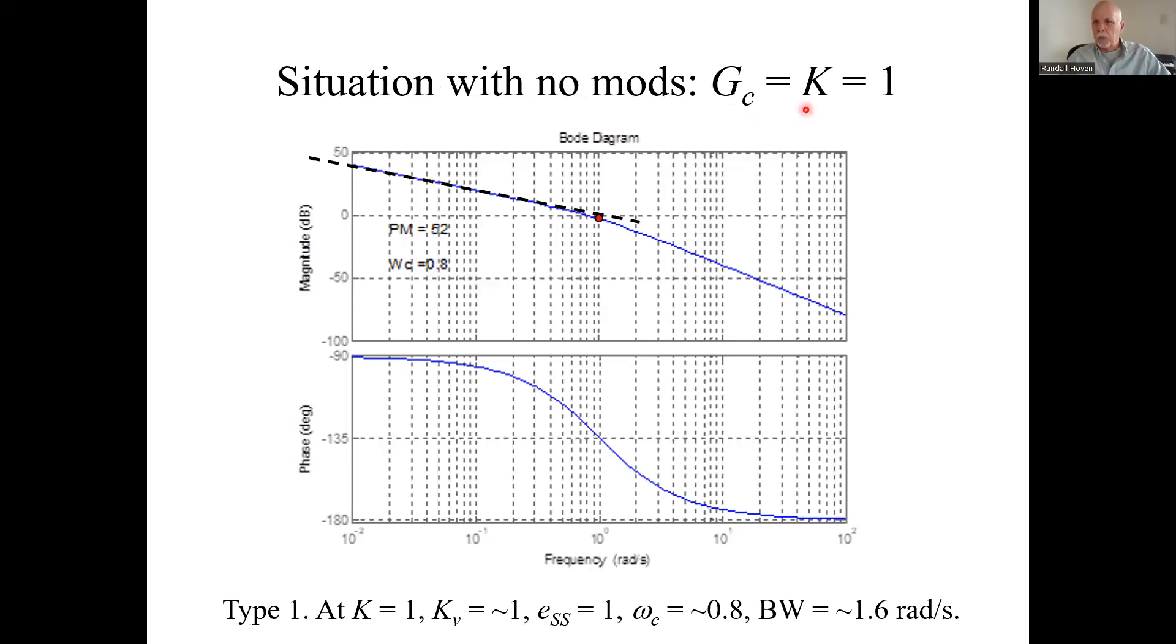With no mods, we're just setting that gain to one. Let's see. This is the 10 to the zero line. Where does this initial asymptote cross it? At about right at zero dB. That means the phase is minus 90, this slope is minus 20 dB per decade, which means it's a type one system. Which means this point here, zero dB line, is our Kv,